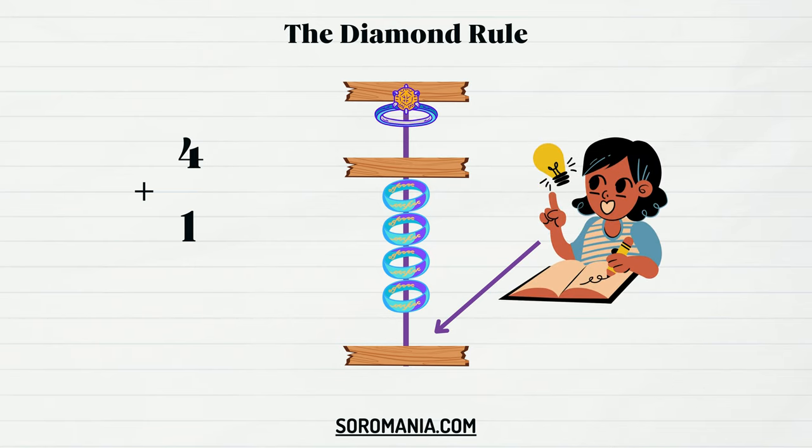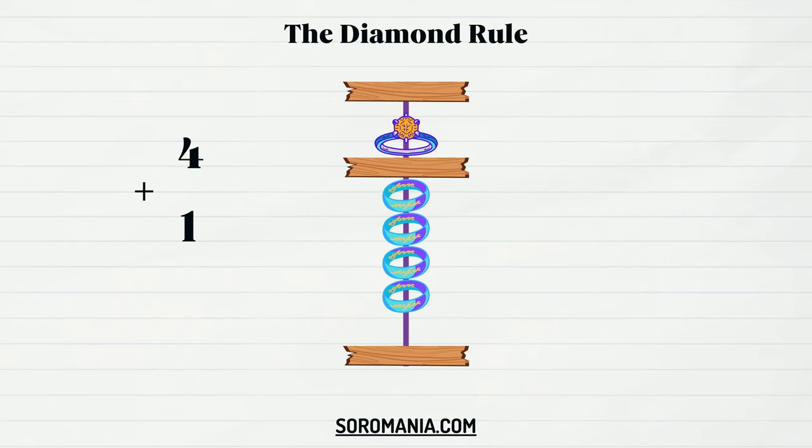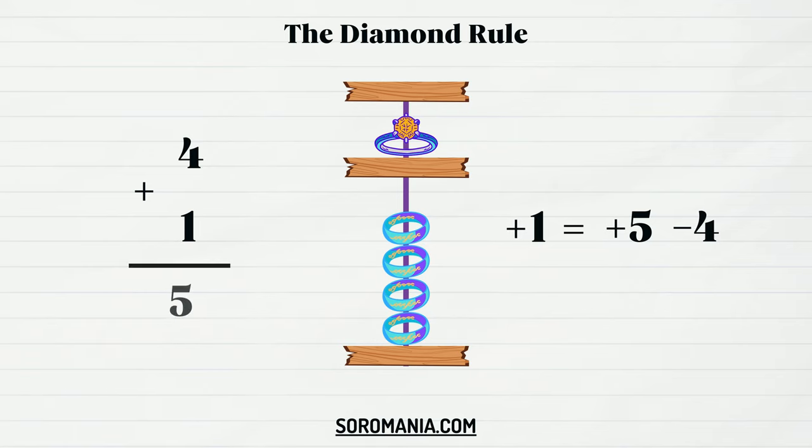Here comes the exchange time. The Diamond Ring has the value of 5 little rings. So, we're gonna borrow it to complete the operation. Add the Diamond Ring, then subtract 4 little rings. The exchange formula is: plus 1 equals plus 5 minus 4. And the result is 5.